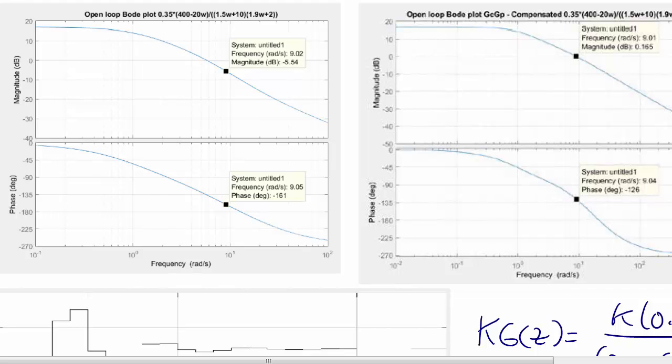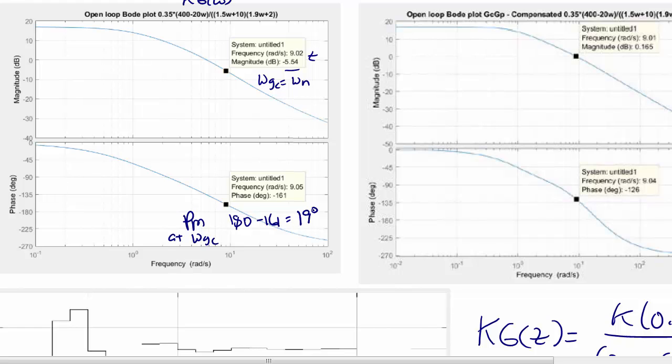Here on the left we have the Bode plot for kG(omega). This expression is the same one that I just wrote. Remember we wanted our desired crossover frequency to be at 9 radians per second. Here is omega_gc, which was omega_n, and we have a magnitude of negative 5.54 decibels. Our phase margin at omega_gc is 180 minus 161, or 19 degrees.